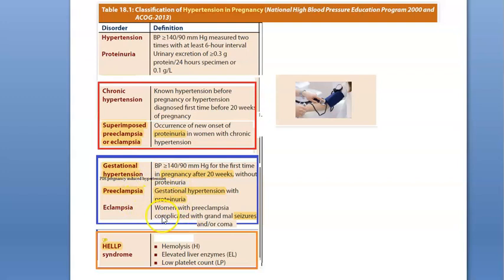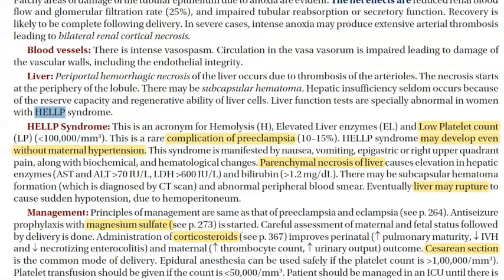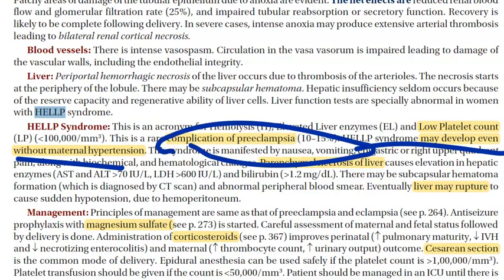Both groups — women with pre-existing hypertension and those without — can develop preeclampsia, which can lead to HELLP syndrome. Notably, HELLP syndrome may develop even without maternal hypertension, but it is still classified as a complication of preeclampsia.